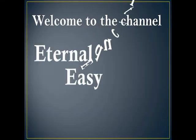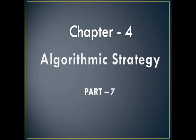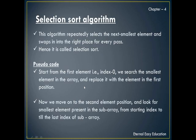Hello students, welcome to the YouTube channel Eternal Easy Education. In this session you are going to learn Chapter 4: Algorithmic Strategy, Part 7. The content of the session is the selection sorting algorithm. This algorithm repeatedly selects the next smallest element and swaps it into the right place for every pass, hence it is called selection sort.